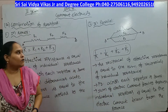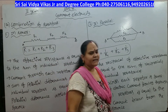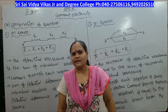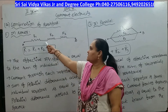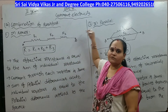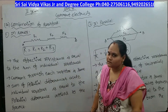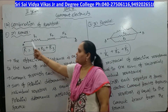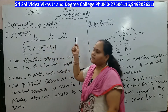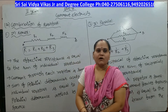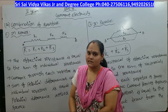Today we are discussing the combination of resistors. Resistors can be arranged in 2 ways: series combination and parallel combination. In series combination, the resistors are connected one after another — R1, R2, R3 — between terminal points A and B. Three resistors connected this way form a series combination.